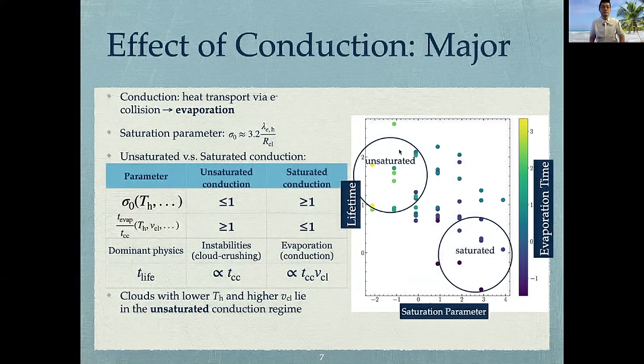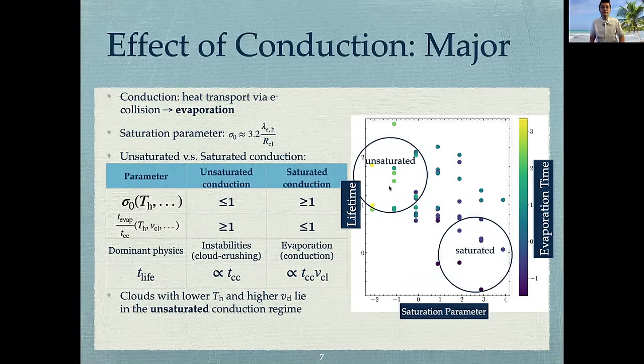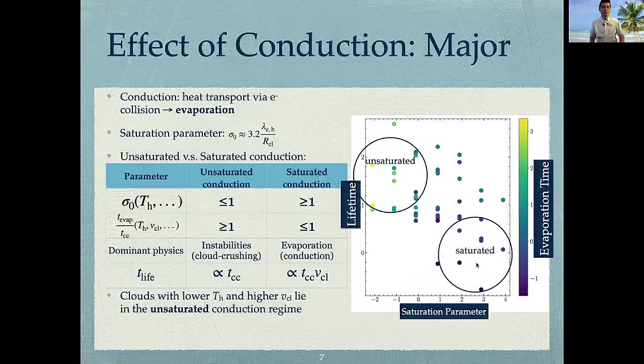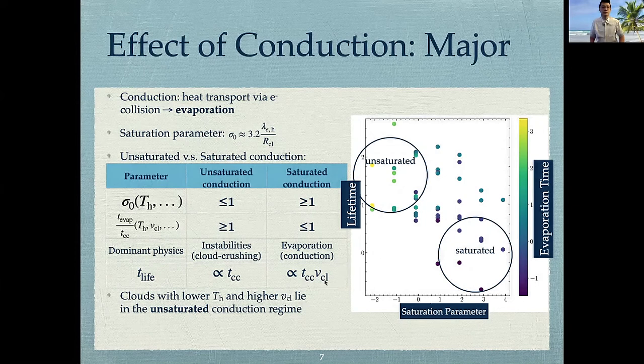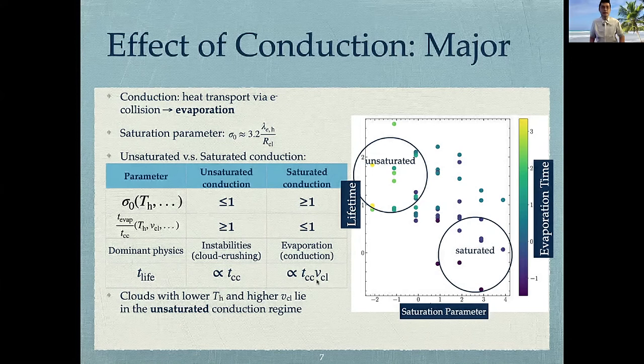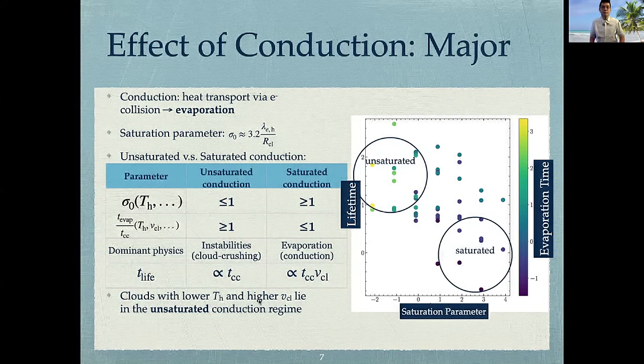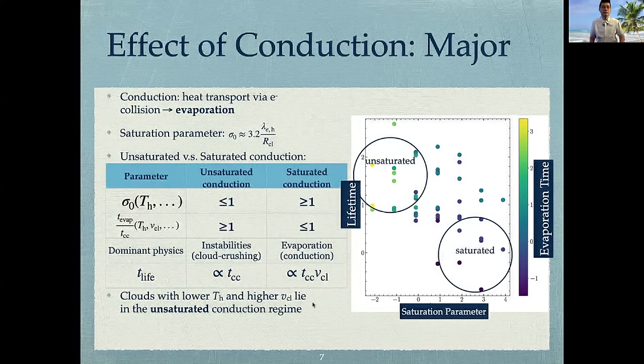As shown on this plot, in the unsaturated regime, the cloud is destroyed by instabilities, and the lifetime is directly proportional to t_cc. However, in the saturated conduction regime, we found that the cloud is destroyed by evaporation due to conduction. And here, the lifetime should be proportional to t_cc times the cloud velocity. So this explains the residual dependence on the cloud velocity that we observed before. Also, the clouds with a lower ambient temperature or higher velocity, they have a weaker residual dependence on the cloud velocity because they basically all lie in this unsaturated conduction regime.